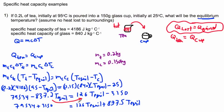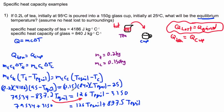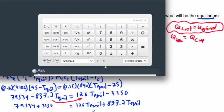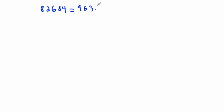On the right side I have 126 times T equilibrium plus 837.5—hold on, I have a mistake. It wasn't 0.5, it's supposed to be 837.2. I just noticed something was weird. So 126 plus 837.2 gives me 963.2 times T equilibrium.